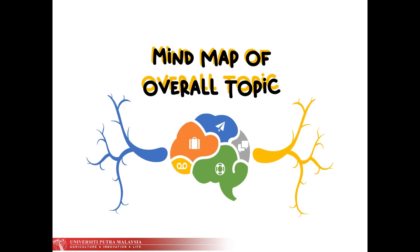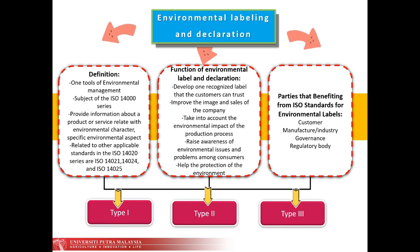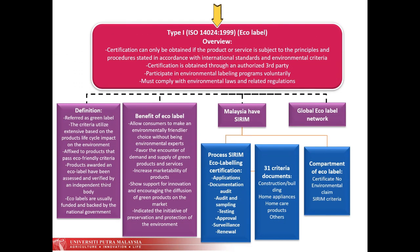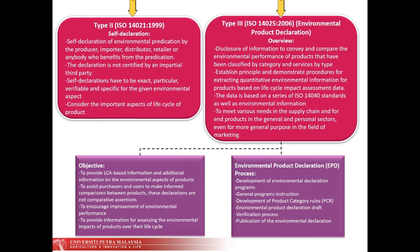Now let's look at the mind map of the overall topics covered. This shows a summarized version for Environmental Labeling and Declaration, which is further divided into the summary of information related to Type 1 ISO 14024 1999, Type 2 ISO 14021 1999, as well as Type 3 ISO 14025 2006.